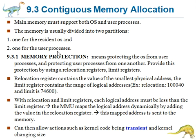The first topic is memory protection, the second is memory allocation, and the third is fragmentation. Memory protection means protecting the operating system from user processes and protecting user processes from one another.